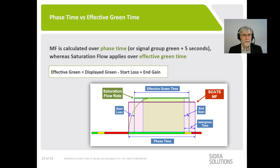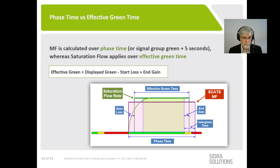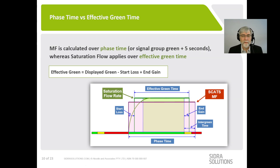Another important difference is that MF is calculated over the phase time — the signal group green plus five seconds — whereas saturation flow applies over the effective green time. The effective green time equals the displayed green time minus the start loss at the start of green, plus the end gain into the yellow period. Generally start loss and end gain are both set at three seconds, so they cancel out. Because of this difference, the saturation flow rate used in a model should always be higher than the SCATS MF value.